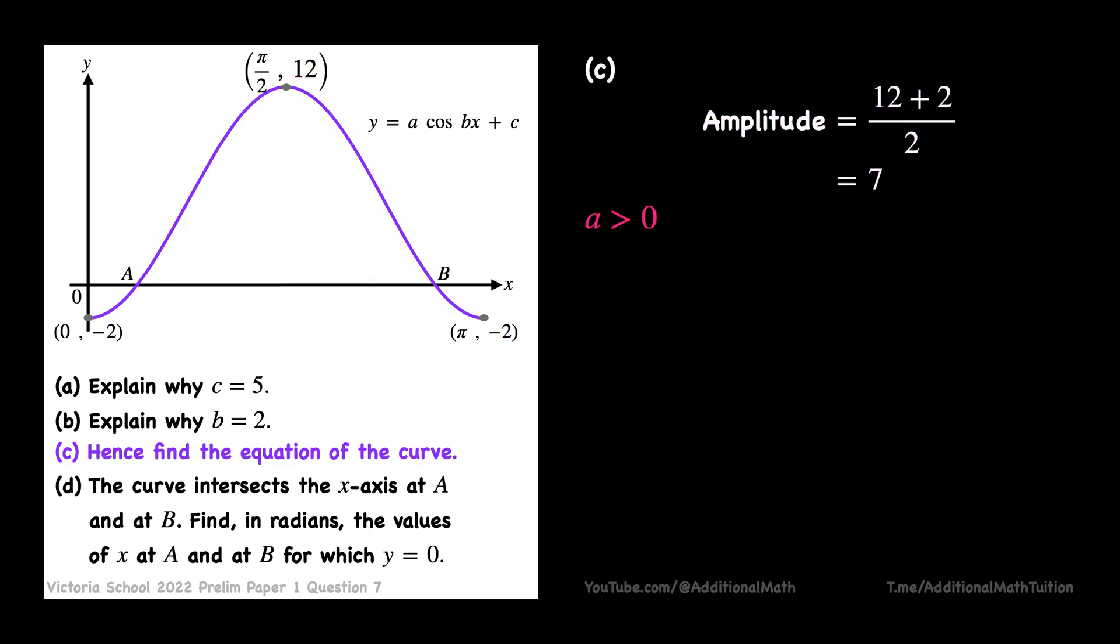If a is positive, it will be a positive cosine graph. And if a is negative, it will be a negative cosine graph.